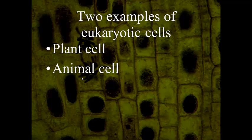The two examples we are going to cover are the plant cell and the animal cell — both are eukaryotic. Don't get plant cell and animal cell confused. It's common to think that a plant cell would be prokaryotic and an animal cell eukaryotic, but actually they have more in common with each other than either does with a prokaryotic cell.